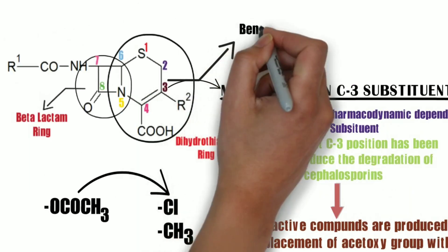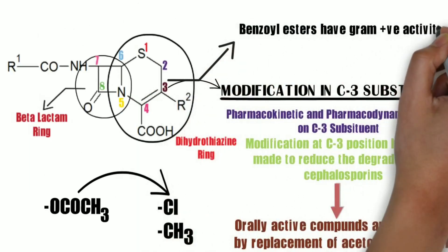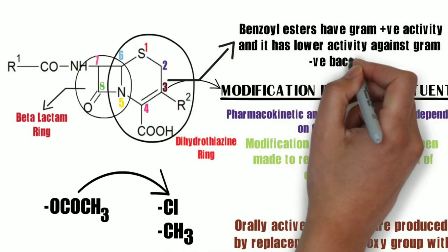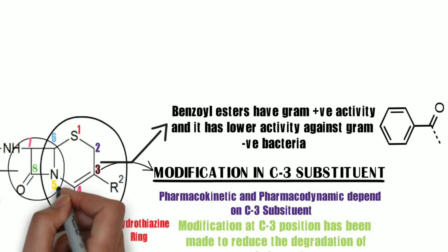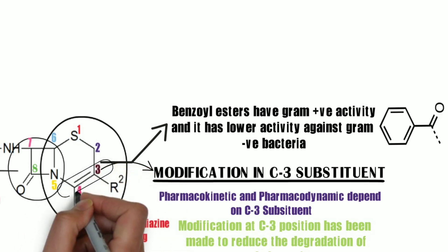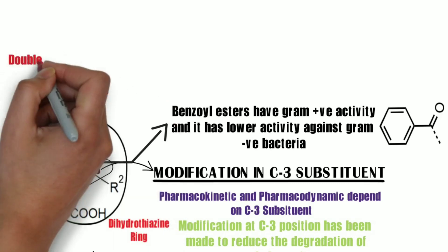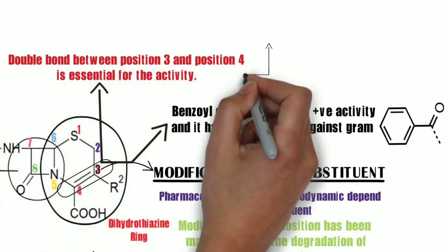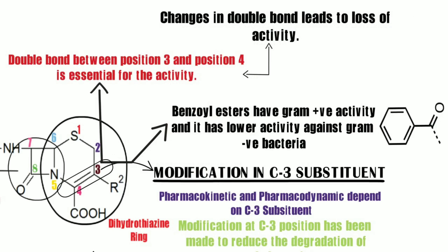If benzoyl esters of cephalosporins are produced, they will have higher gram-positive bacteria activity as compared to gram-negative bacteria activity. Additionally, the double bond between positions 3 and 4 is essential for activity — if that double bond is changed or modified, it will lead to a loss of activity.